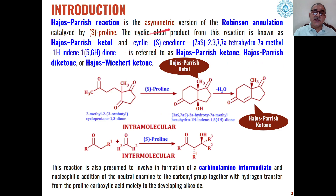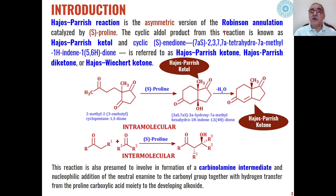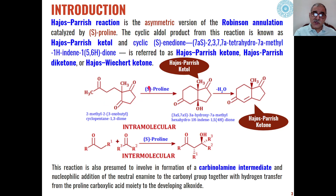Basically, the Hajos-Parrish reaction is an asymmetric version of Robinson annulation, which we have already discussed in previous lectures. The difference from Robinson annulation is that here this reaction is catalyzed by S-proline, and it can take place intramolecularly as well as intermolecularly.